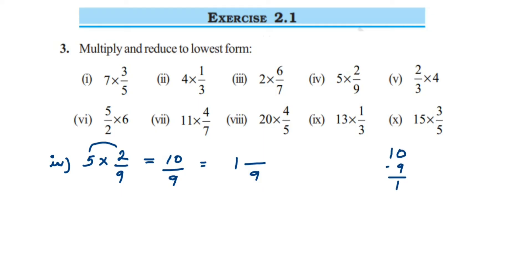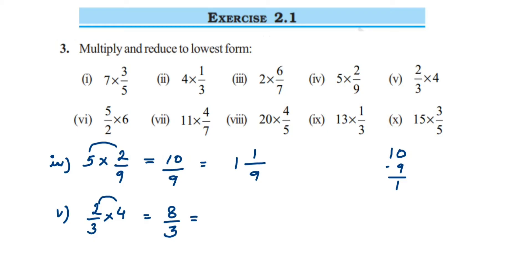Next we have 2/3 multiplied by 4. Here also we cannot cancel numbers, so multiply the numerators: 2 × 4 = 8, and the denominator stays 3, giving 8/3. Convert to mixed fraction: 3 × 2 = 6; subtract to get remainder 8 − 6 = 2. So 2 will be the numerator and the answer is 2⅔.